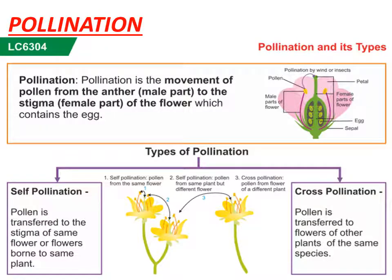First, we have to discuss the term pollination. Pollination is the transfer of pollen grains from the open anther of the stamen to the receptive stigma of the carpel. Pollination is categorized into two major types: self-pollination and cross-pollination. Self-pollination involves the transfer of pollen grains from the anther of a flower to the stigma of the same flower, which should be genetically similar. In cross-pollination, pollen grains are transferred from one flower to the stigma of a flower on another plant, but the species must be the same for fusion of gametes to be possible.